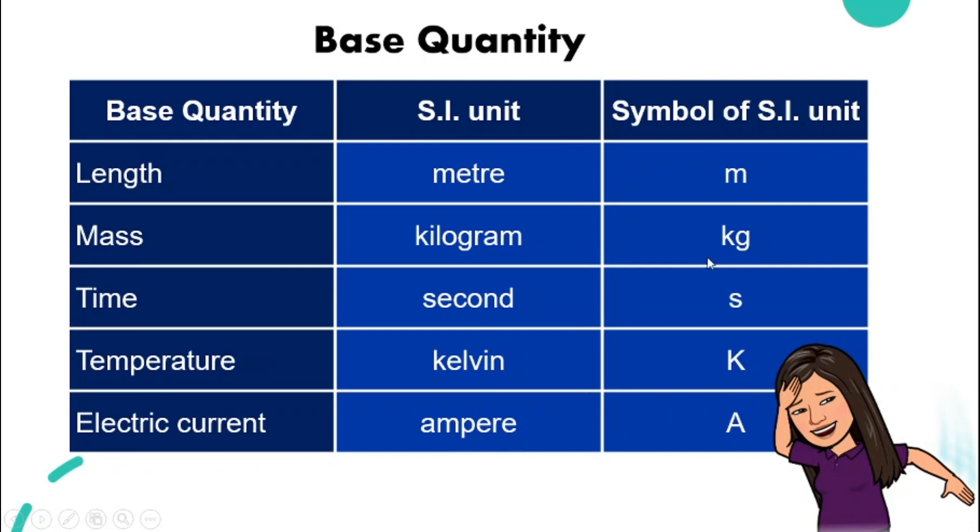So I need you to pay attention to the symbol here. Note that for meters, kilogram, and second, you write them in small letter. But when you need to write Kelvin or ampere, it will be big letter K and A.